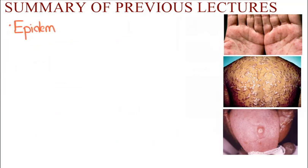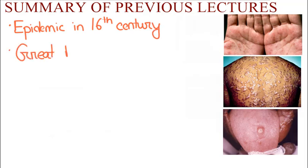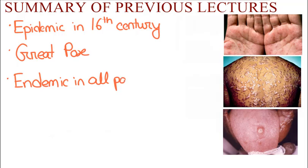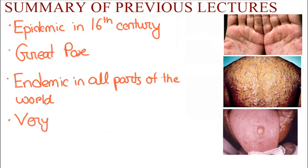It was first recognized in epidemic form in the 16th century Europe as the great pox. Now syphilis is endemic in all parts of the world. Treponema pallidum is a fastidious organism — that means it is very fragile. It can't survive outside the human body and can't tolerate heat.